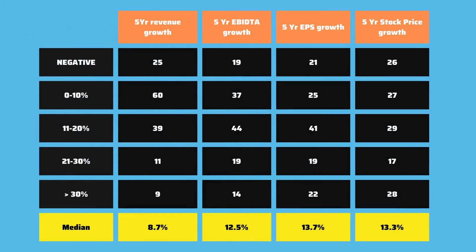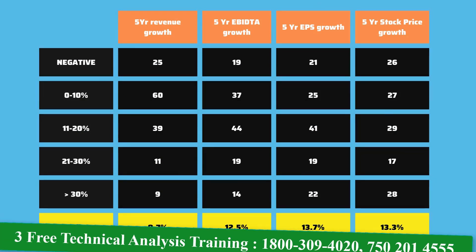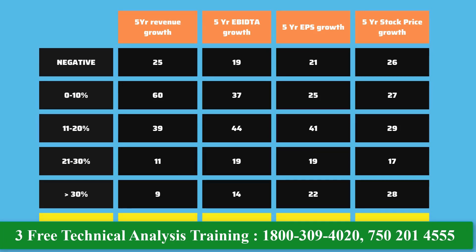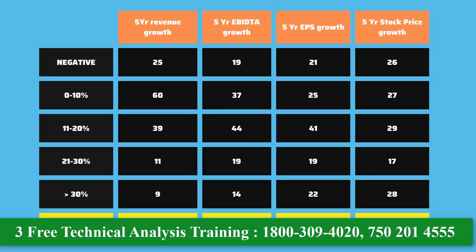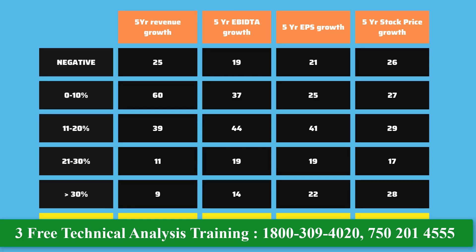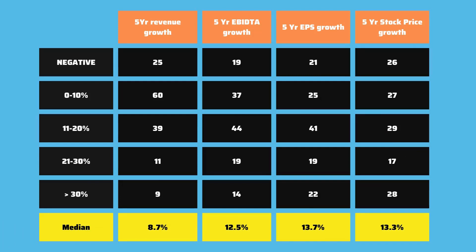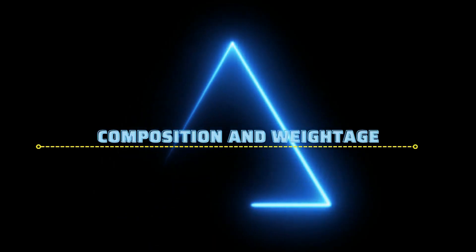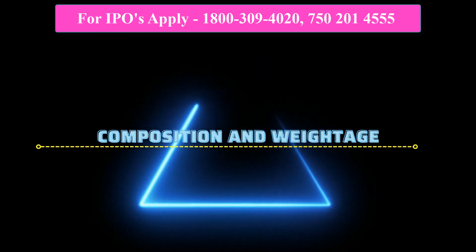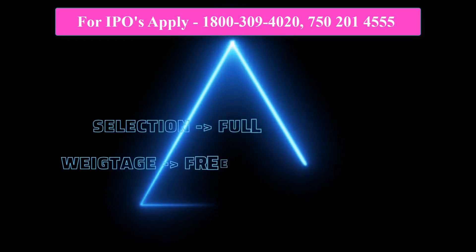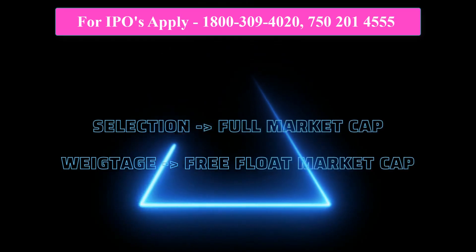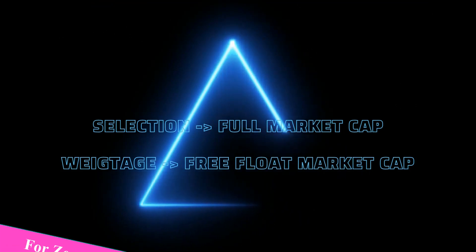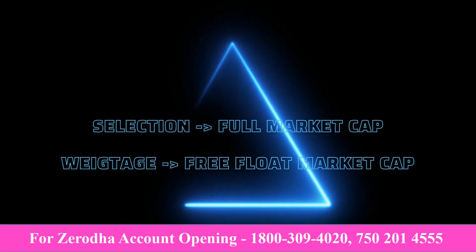Interesting to note is that on examining the performance of the present 150 mid cap companies, the average constituent has been growing at 8.7%, while the EBITDA, EPS and stock price has been growing at 12 to 13%. Numbers relevant to individual companies may not be as significant to the index because a lot depends on its weightage. When it comes to selection of companies in the index, it depends on the full market capitalization. However, for weightage, it depends on the free float market capitalization.